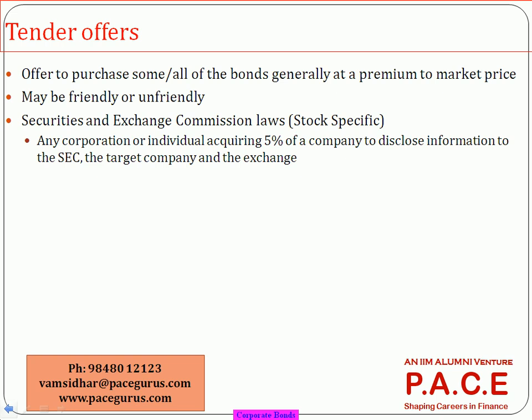If the promoters of Air Deccan had done the same — buying back their own shares via tender offer — their stake would have increased and the takeover would have been avoided. Tender offers can be hostile or friendly. In hostile cases, more and more premium enters the market. For shares, any acquisition of more than five percent of stake must be informed to the SEC, and significant tender offer purchases must also be reported to regulatory bodies to prevent market imbalances.